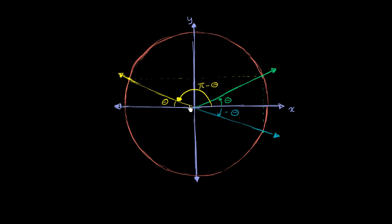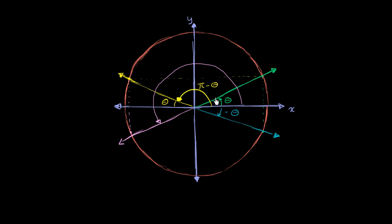Now let's flip this one over the negative x-axis. You get a point over there and an angle that looks like this. To reach that far is pi radians, and then you go another theta beyond that. So this whole angle is pi plus theta radians.